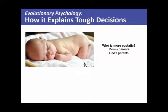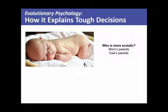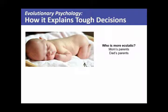Who is more ecstatic — mom's parents or dad's parents? Evolutionary psychologists say mom's parents are more ecstatic because they know for a fact that the baby carries their genes — the baby came out of their daughter's body. The dad's parents know it's their offspring, especially in times of monogamy, but mom's parents are absolutely 100% confident. Mom's mom knows for sure those are her genes in that grandbaby. Dad's parents, on the other hand, look for evidence of it in the baby — 'oh look, it has dad's nose.'